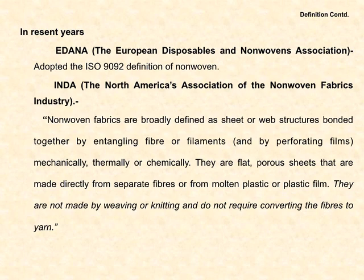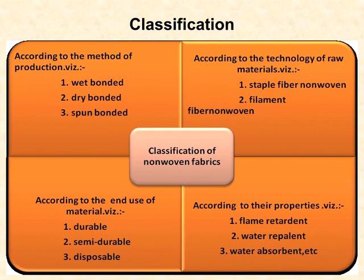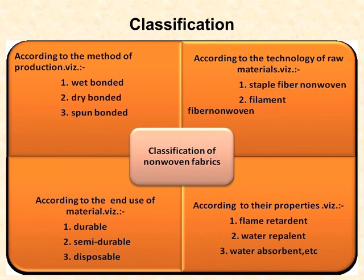Overall, we can define non-woven as fabric formed by joining fibers using different chemicals, solvents, or other means. Non-wovens are classified according to: method of production — wet bonded, dry bonded, and spun bonded; technology of raw material — staple fiber non-woven and filament fiber non-woven; and end use — durable, semi-durable, and disposable, such as tissue papers and sanitary napkins.